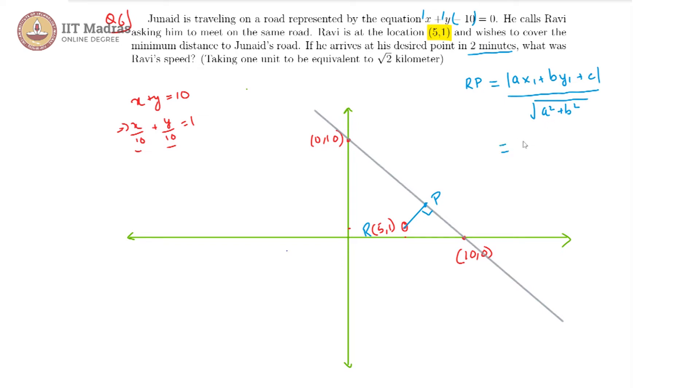We have this is equal to modulus of 5 plus 1 minus 10 divided by root of 1 plus 1, because a is 1 and b is 1, the squares are also 1.